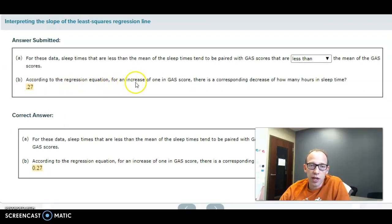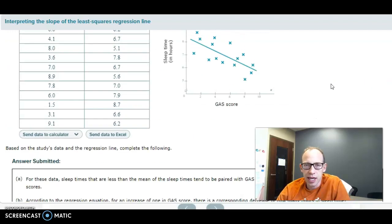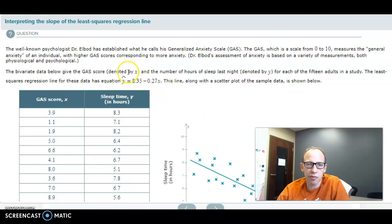According to the regression equation, for an increase of one in GAS score, which is our X variable, there's a corresponding decrease of how many hours in sleep time? Anytime you have this linked connection between the two, it's going to be connected to slope. The intercept is independent—it's always going to be 8.35 regardless of what the value of X is. But the slope is going to cause a change in our Y depending on what X is. If we increase by one on the X,